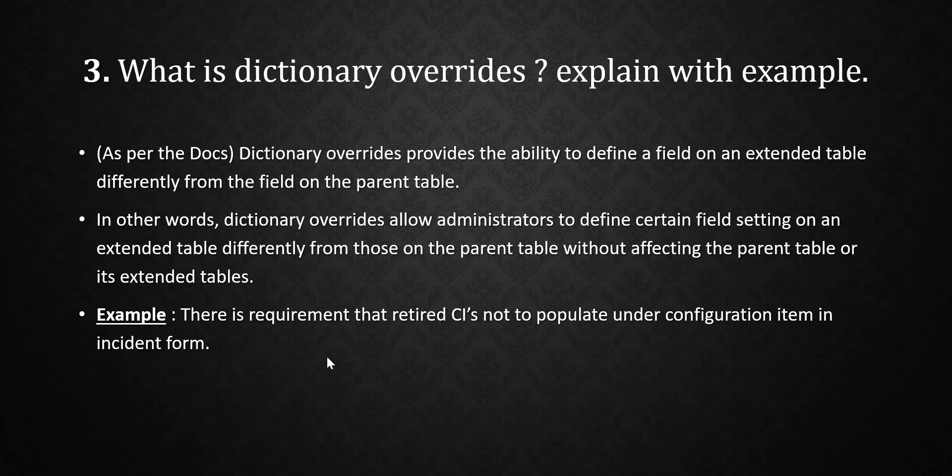In incident there is a field called Configuration Item, and that field actually exists in the task table. There are many child tables of the task table — like incident, change, problem, and service request. You might get a requirement where whatever retired CIs exist, you don't want them to populate in the incident form, but in change, service request, or problem forms they can populate. That is when you would write a dictionary override to achieve this.